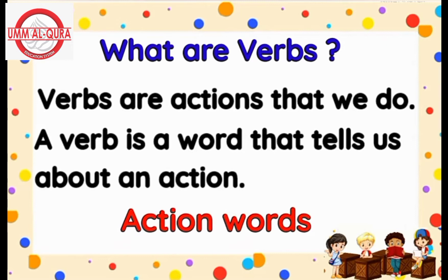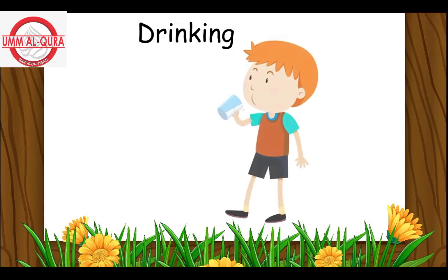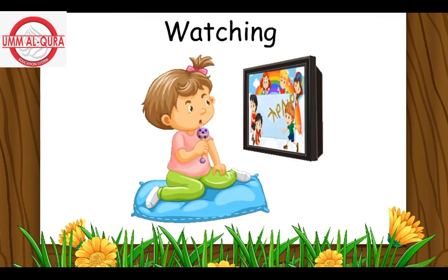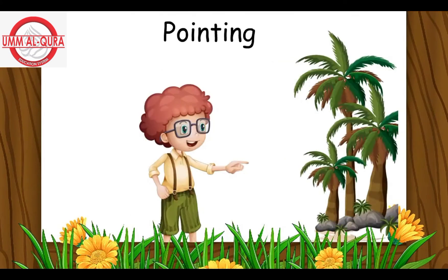Now let's understand this better with the help of a few examples. The boy is drinking — the word drinking is an action. The boy is sleeping on the bed — the word sleeping is an action. The girl is watching a television — the word watching is an action word. The boy is pointing at the tree — the word pointing is an action word.